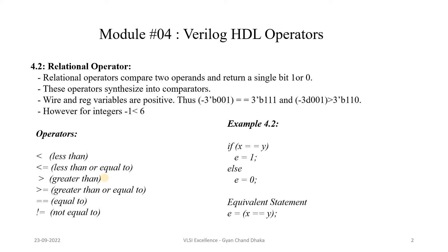Now let's see the second type of operator which is relational operator. As the name itself suggests, it describes some kind of relationship between more than one operand — typically two operands. Relational operators compare two operands and return a single bit value which is nothing but true or false. When we synthesize the design, all relational operators in our design will result in a comparator circuit. Wire and register variables are always positive.